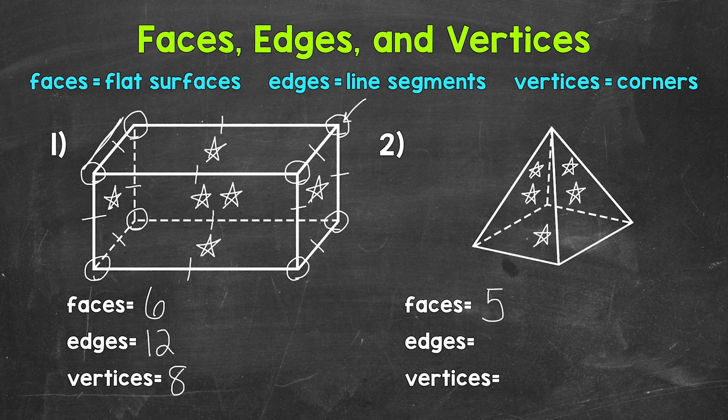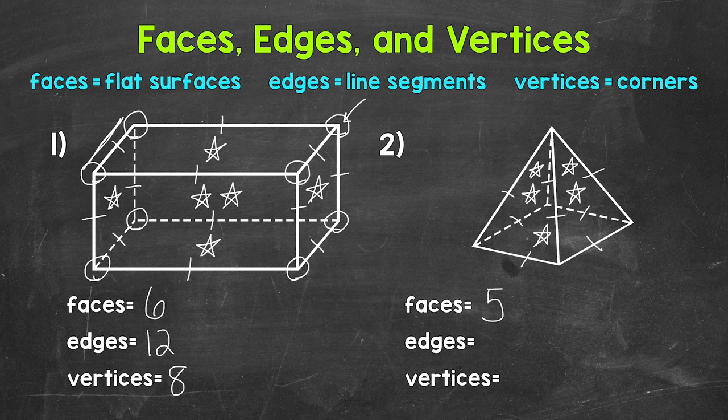Now let's identify and count the edges. Let's start up front here. So this is one edge and work our way around. Two edges, three edges, four edges. Now let's go around the base. Five edges, six edges, seven edges, eight edges. So eight total edges.